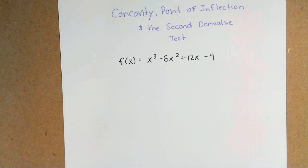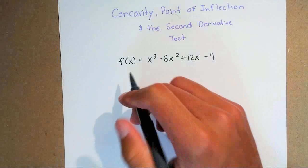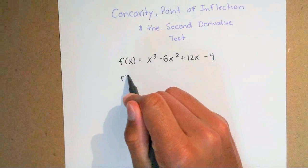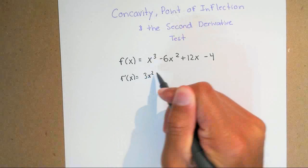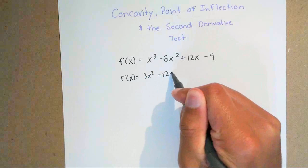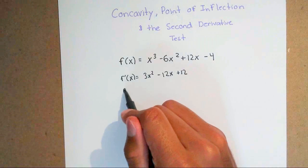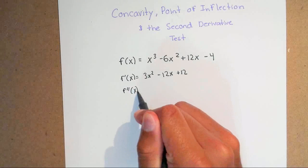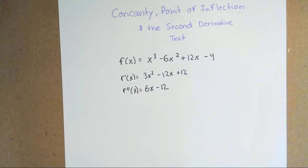Anytime that you see a question that asks you to find your intervals of concavity, you want to be able to find your second derivative. So the first thing is you've got to find your first derivative, which gives you 3x squared minus 12x plus 12. Once you find your first derivative, go ahead and find your second derivative, and you get 6x minus 12.